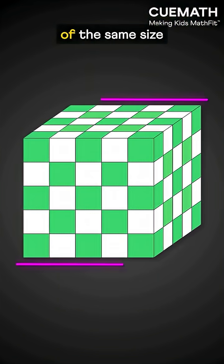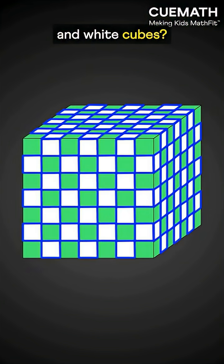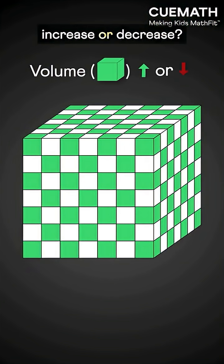What if another cube of the same size is made from even smaller green and white cubes? Will the green volume increase or decrease?